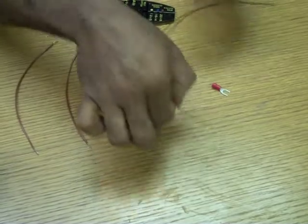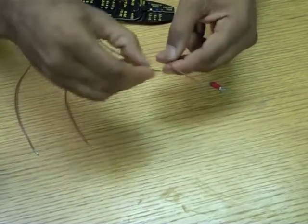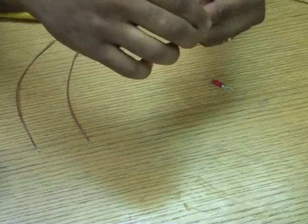Twist one end of a shorter wire and one end of the longer wire together, then insert and crimp them into the spade terminal.